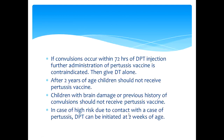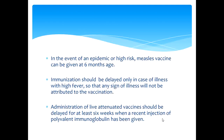In case of high risk due to contact with a case of pertussis, DPT can be initiated as early as two weeks of age. In the event of an epidemic, measles vaccine can be given at six months of age instead of nine months. Immunization should be delayed only in case of illness with high fever, so that any sign of illness will not be attributed to the vaccination. Administration of live attenuated vaccines should be delayed for at least six weeks when a recent injection of polyvalent immunoglobulins has been given.